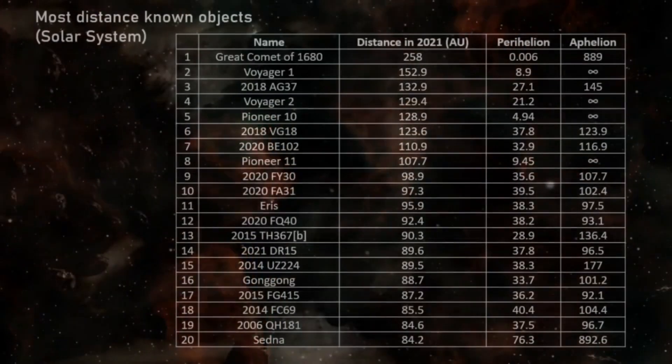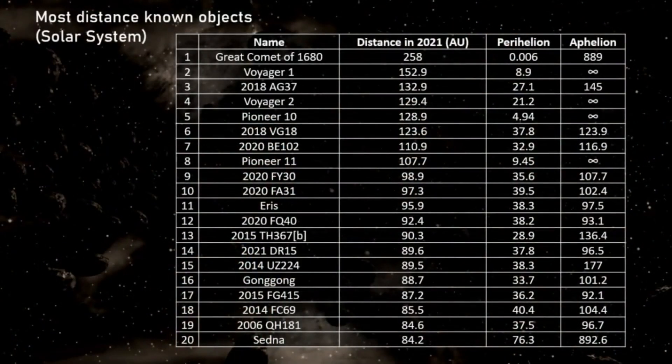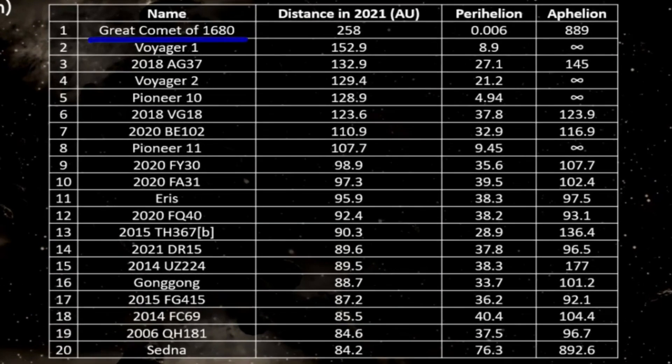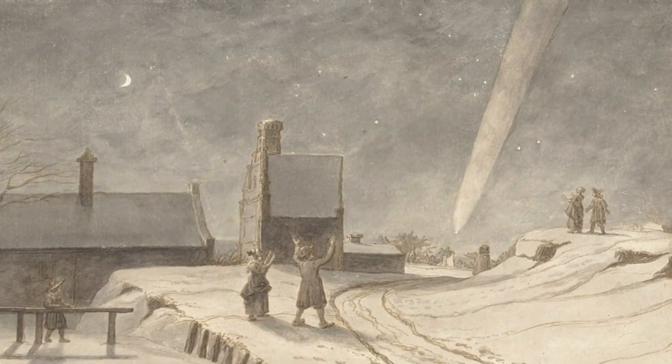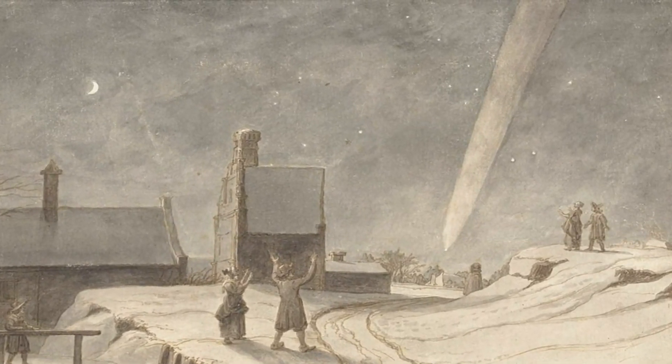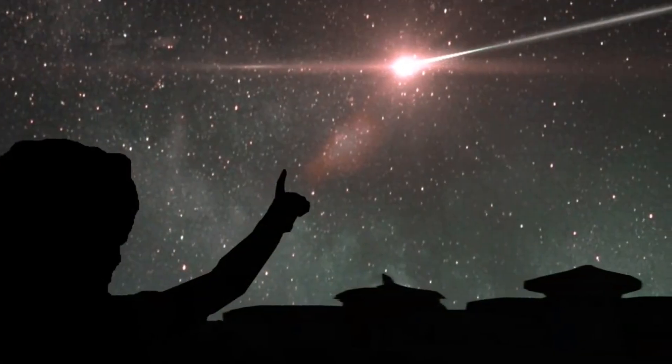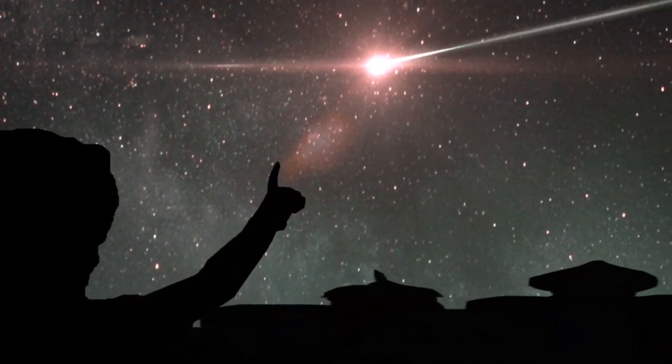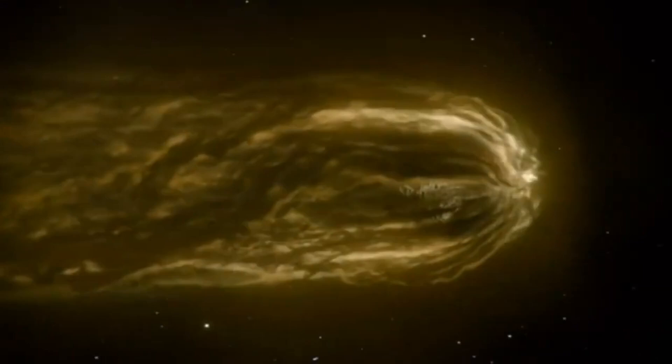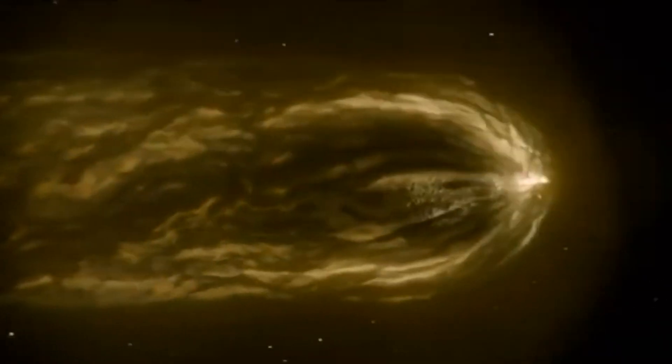In this table we can see what the most distant objects known are currently observed in our solar system. First is the Great Comet. Indeed, it was the first comet discovered by a telescope and was one of the brightest comets of the 17th century. I'm making a presumption now, but the only reason we know of its existence is because at one point it was closer to the Sun, and we can mathematically track back its orbit.